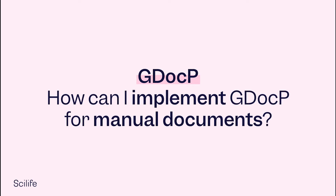Admittedly, this is a long definition, but it is critical that you understand it. The implementation of GDocP should be founded on a risk-based approach to records and data management that will ensure adequate control strategies are in place to guarantee GXP data integrity. Once you identify the risk, you must complete risk mitigation with regard to record and data integrity tasks.